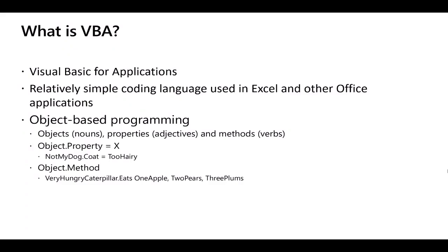The way code is presented in VBA involves an object and a property. For example, 'this is my dog' — the dog is the object, the coat is the property, and you can set that coat to be 'too hairy.' Alternatively, an object and an action: the Very Hungry Caterpillar will eat — with parameters: one apple, two pears, three plums. In VBA you always have an object with either an action or a property that needs to be changed.